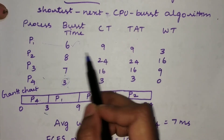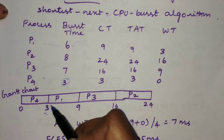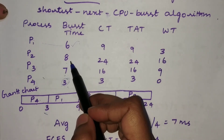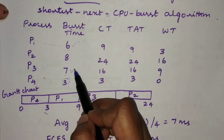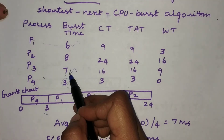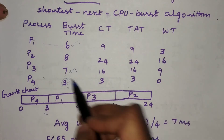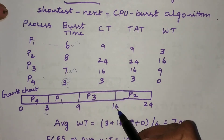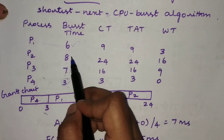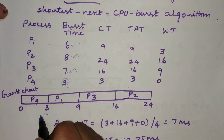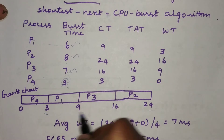The next shortest burst time is P1, so we schedule P1 after P4. Its burst time is six, so it completes at time nine. Then P3 is the next shortest, with a burst time of seven, completing at time sixteen. Finally, P2 is scheduled last and completes at time twenty-four. These are the completion times for each process.